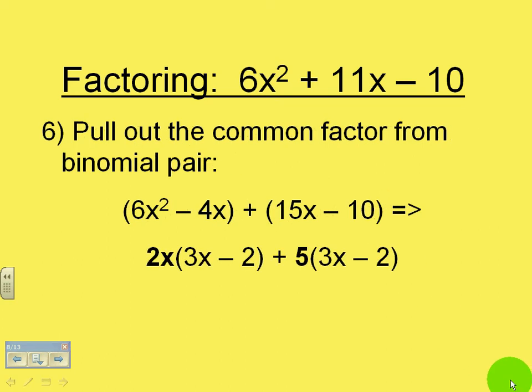Now from these two binomials we're going to pull out common factors. So we get 2x from the first one leaving behind 3x minus 2 and we pull out a common factor of 5 from the second binomial leaving us 3x minus 2.